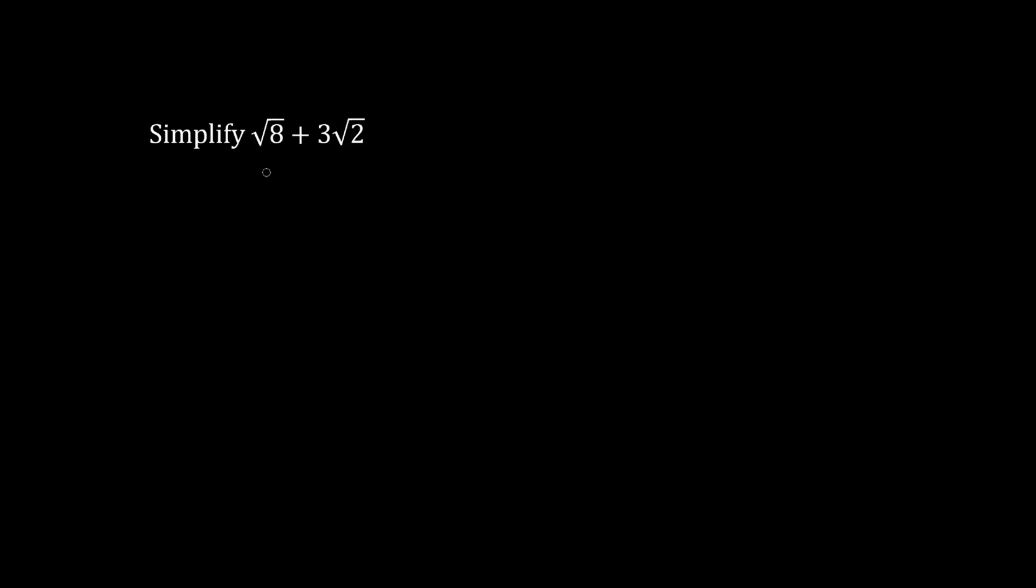Let's simplify root 8 plus 3 root 2. Root 8 is the same thing as 2 root 2, because we have root 2 times 2 times 2, and there's a group of 2's that breaks out of the radical, and only one survives. So what is 2 root 2 plus 3 root 2? This is like saying what's 2 apples plus 3 apples, and the answer is 5 apples, or 5 root 2.